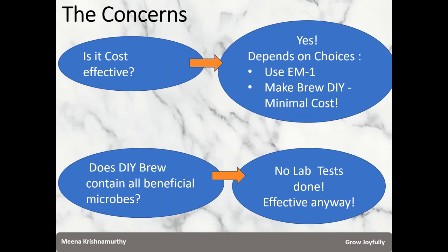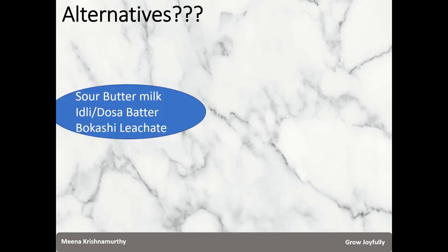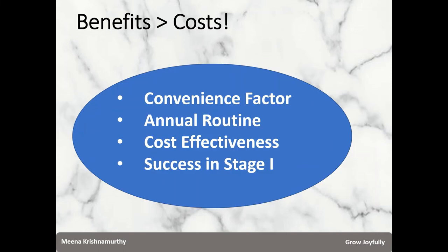I have heard people talking about doing away with Bokashi bran altogether. The alternative suggestions include sour buttermilk, idli or dosa batter from South India, or the Bokashi leachate itself to use in Stage 1. However, I have only heard people talking about these alternatives — I do not have any testimonial where someone has used them successfully and consistently with equal effectiveness. To summarize, the benefits outweigh the costs. I find it hugely convenient to make Bokashi bran at home once a year and have it available all the time for Stage 1 fermentation.